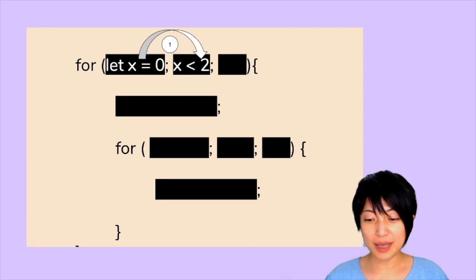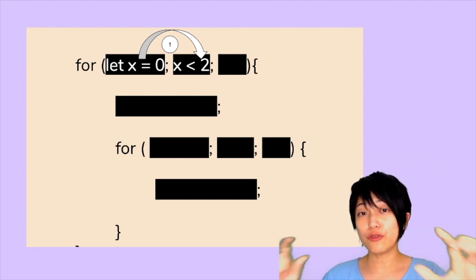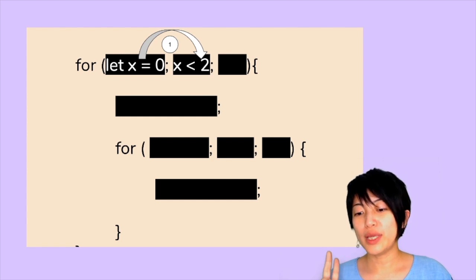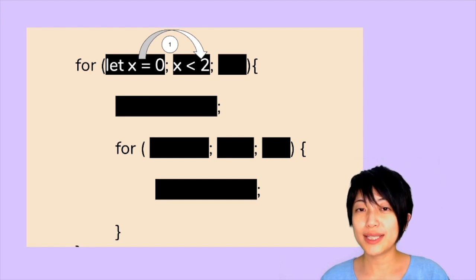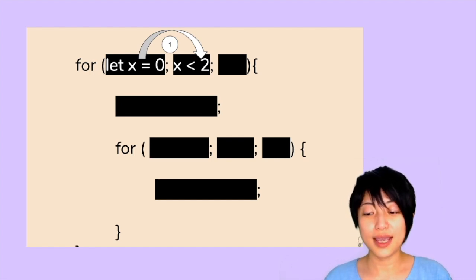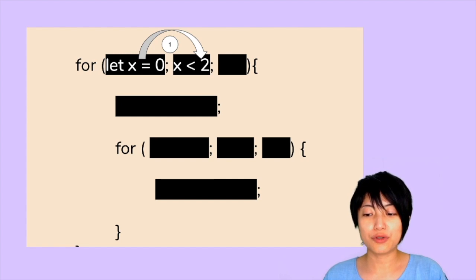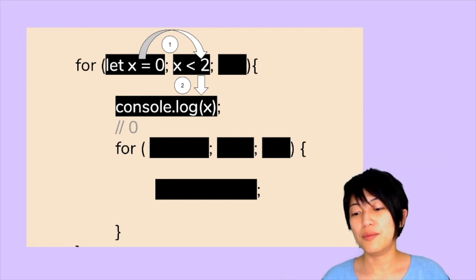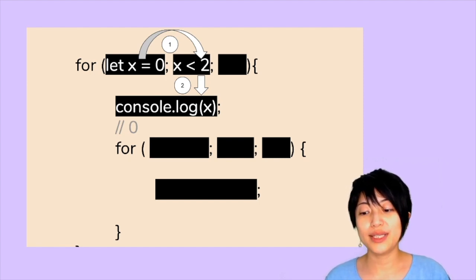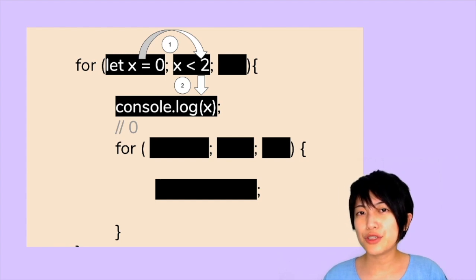The first step is starting with the first for loop. We have declared a variable let x equals 0, which is tested against the condition x smaller than 2. So if x equals 0 is smaller than 2, we advance to the next stage and indeed console.log prints x as 0. That is exactly how a for loop is supposed to work.